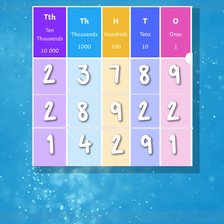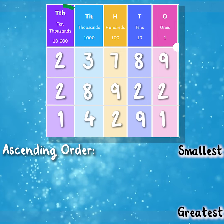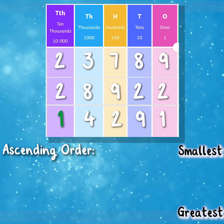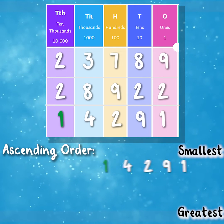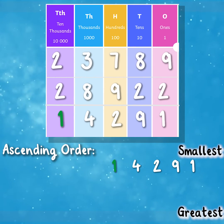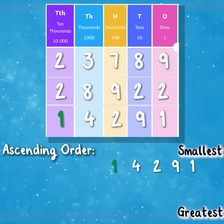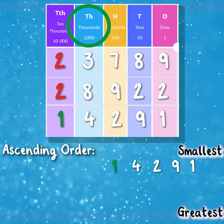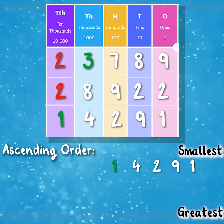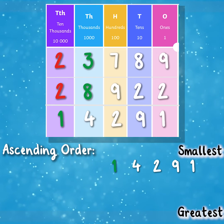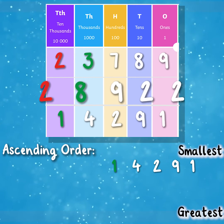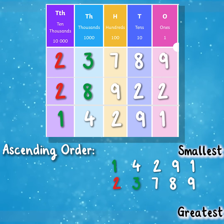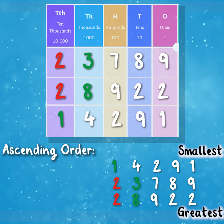When ordering these numbers in ascending order, we start with the smallest. All three numbers have their highest value digit in the ten thousands column. One is the smallest digit in the ten thousands column, so 14,291 is first in our sequence. We're now left with 23,789 and 28,922. Both have the same digit in the ten thousands column, so we look to the thousands column. 23,789 has a three and 28,922 has an eight. Since three is less than eight, the order is 14,291, then 23,789, then 28,922.